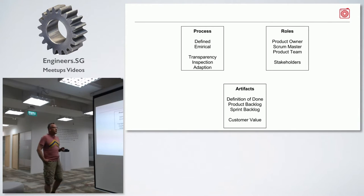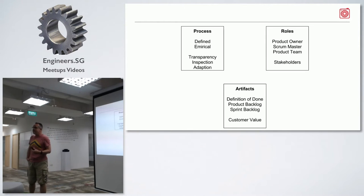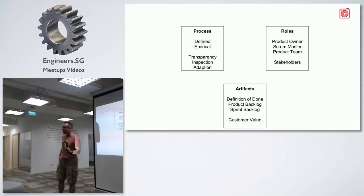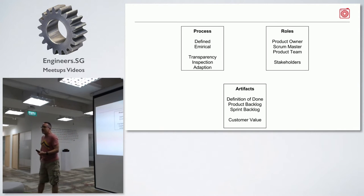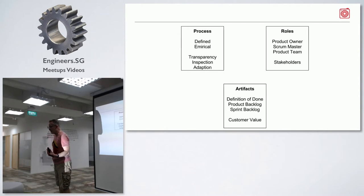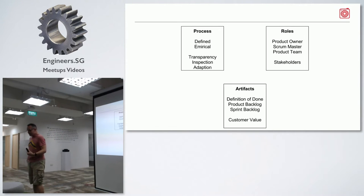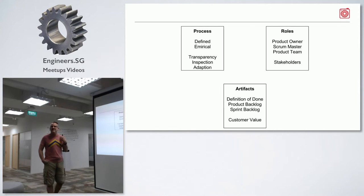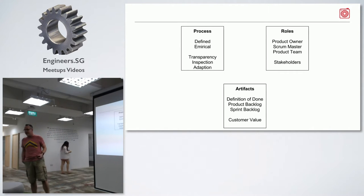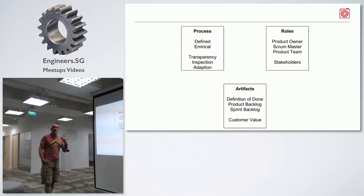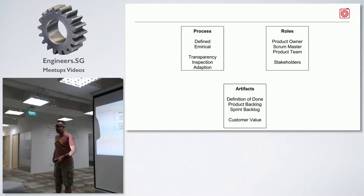Next we talked about Scrum a little bit — the roles. There are some important roles in Scrum. First is the product owner, then the Scrum master, the product team, and the stakeholders. The product owner is the person who maintains the vision of the product — where is it going? They're responsible for deciding what will be done. The Scrum master is there to facilitate the process, to help the team move forward effectively, and to clear any roadblocks in their way — or what are called impediments in Scrum.